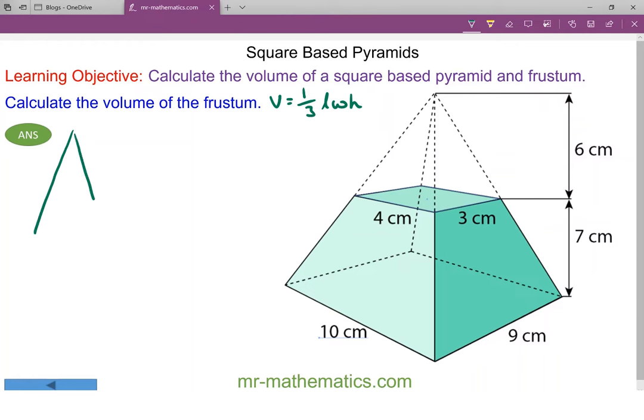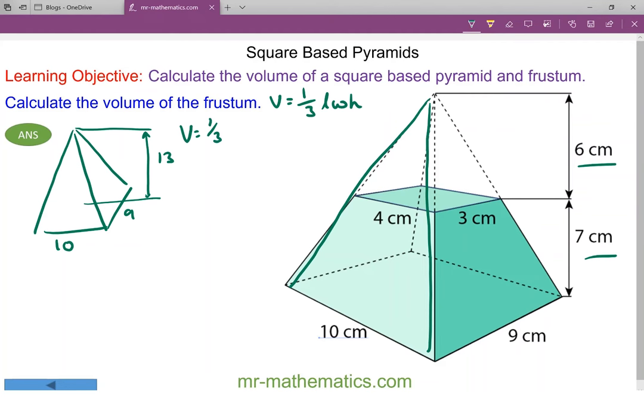We're going to consider the biggest square based rectangular pyramid where the base is 10 by 9 and the perpendicular height is 6 out of the 7, which is 13. So the volume is one third of 10 multiplied by 9, the length times the width, times the perpendicular height of 13.